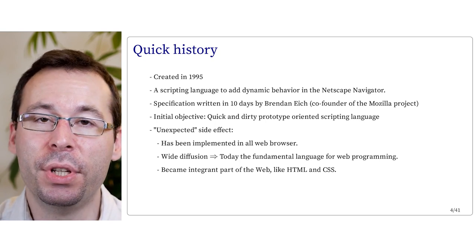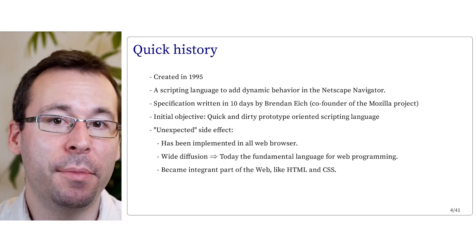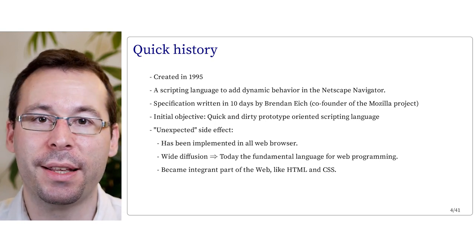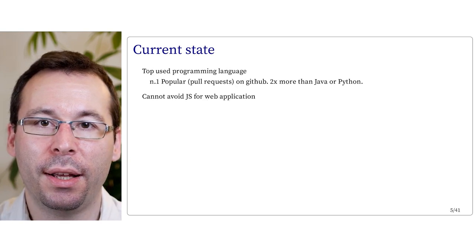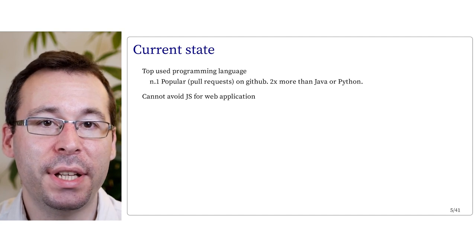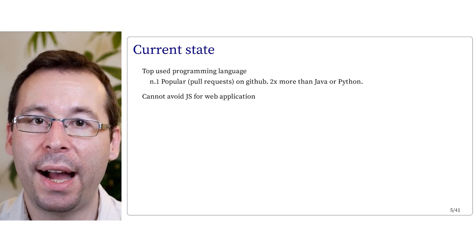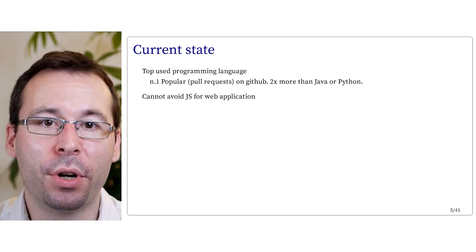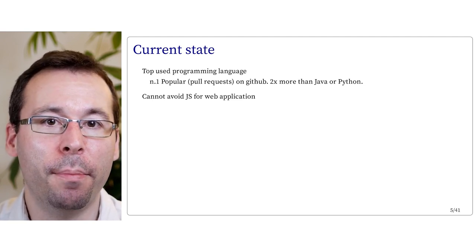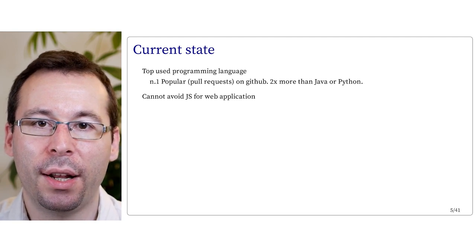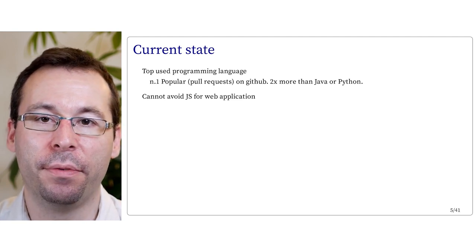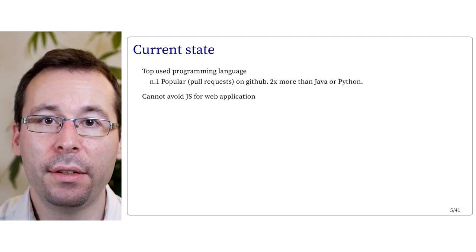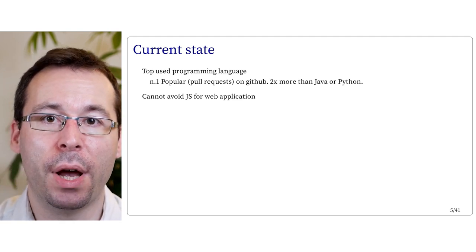As it's used in all browsers, it became an integral part of the web, similarly to HTML and CSS. As it's the language necessarily used by a navigator, it's now the most widely used programming language — for instance, it's the most popular in terms of the number of pull requests on GitHub, about twice more than Java or Python. Basically, no one can avoid JavaScript for a web application.